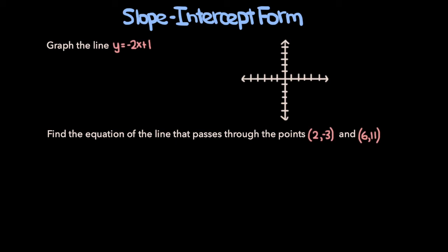Now let's do two problems to reinforce what we've learned about slope-intercept form. The first one says to graph the line y equals negative 2x plus 1. One approach is to create a table, but here's an alternate method. Using slope-intercept form y equals mx plus b, the slope m is negative 2 and the y-intercept b is 1. We start by plotting the y-intercept: since b equals 1, the line crosses the y-axis at the point (0, 1).